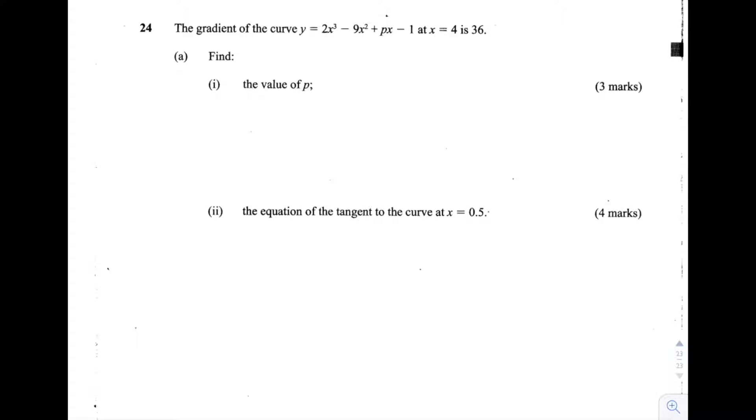This is question number 24 of the 2015 KCSE Math Paper 1. The gradient of the curve y equals 2x cubed minus 9x squared plus px minus 1 at x is equal to 4 is 36.